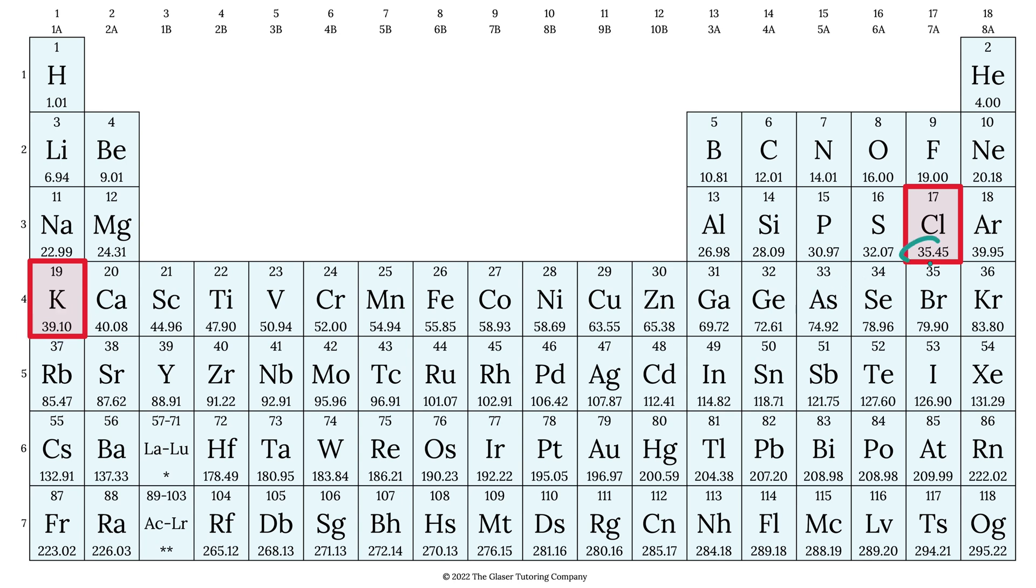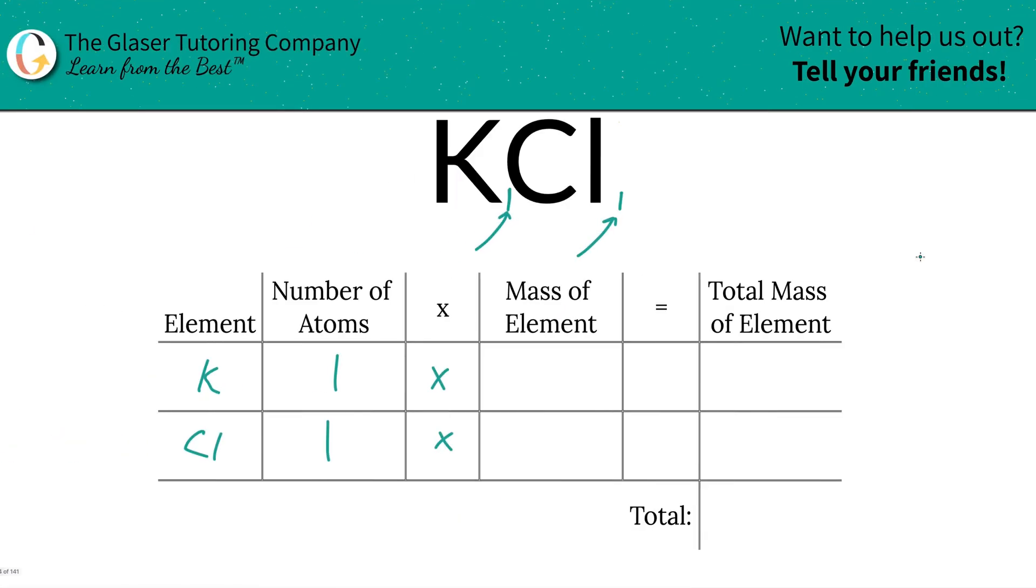So here we got 39.10. We got chlorine is 35.45. So let's write them on down. So here for potassium, we got 39.10. For chlorine, we got 35.45.